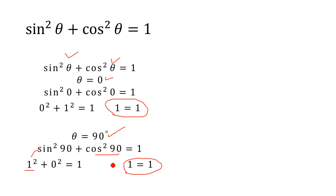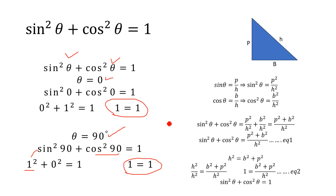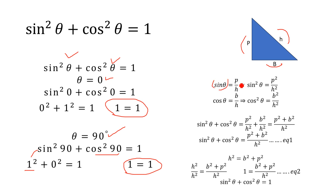Now the second method we are going to use is a geometrical approach. Let's suppose we have a right angle triangle — this side is the base, this is the perpendicular, and this is the hypotenuse. According to the definition of sin theta, sin theta is equal to perpendicular divided by hypotenuse. Taking the square of both sides, we have sine squared theta equals perpendicular squared divided by hypotenuse squared.